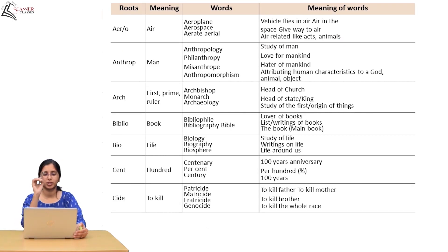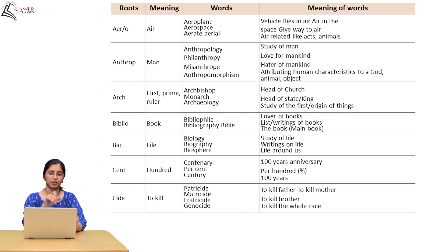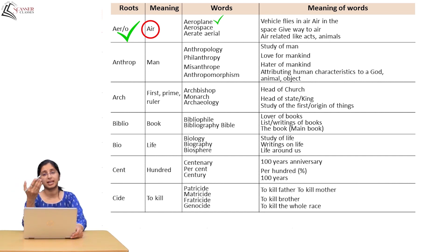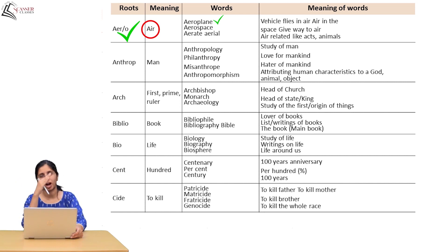Let's see some root words and understand what they mean. The root 'aero' means air. For example, aeroplane — it is a vehicle that flies in the air. The word 'aero' is connected to air, and from this root we can see how words are formed.